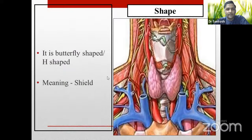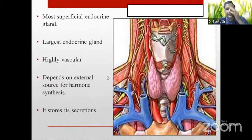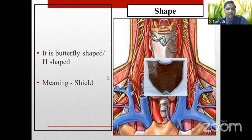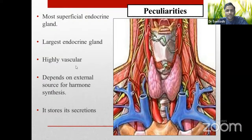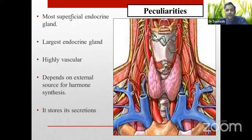Thyroid means shield. It is a butterfly-shaped or H-shaped endocrine gland present in the neck. Its peculiarities: it is the most superficial endocrine gland — meaning it is the only endocrine gland accessible for physical examination — and it is the largest endocrine gland. It is also highly vascular, which is why blood supply and relations of blood vessels become very important for surgeons performing thyroidectomy to create a bloodless operative field.